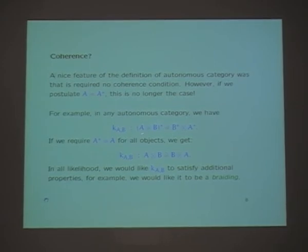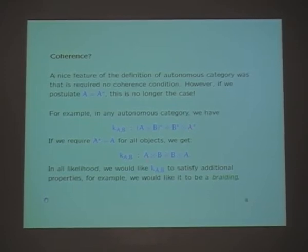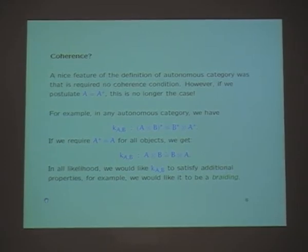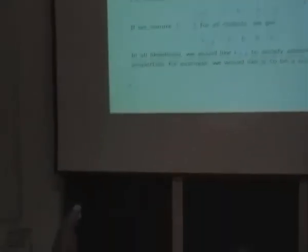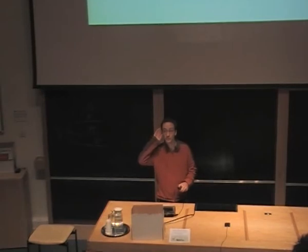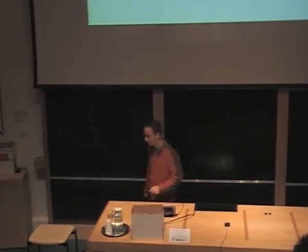Setting A equal to A-star is quite a big operation to do, because all kinds of other structure suddenly appear, and you need that structure to satisfy coherence. For example, in any autonomous category we have this isomorphism, so if A equals A-star, you immediately get that A tensor B is isomorphic to B tensor A. In an arbitrary autonomous category you have no such thing — it's not symmetric. But if you do get these isomorphisms from A tensor B to B tensor A, the only way to draw them as a diagram is as some kind of crossing, and then you have to require that it also satisfies, for example, the braid equations.